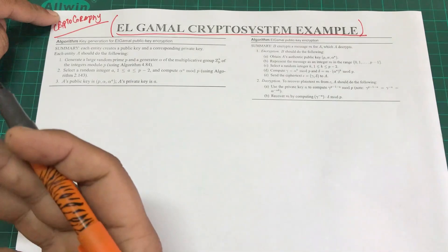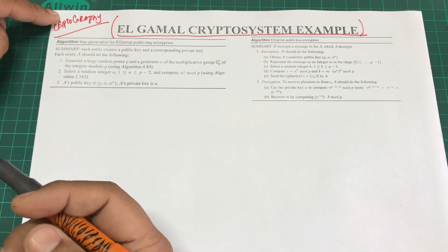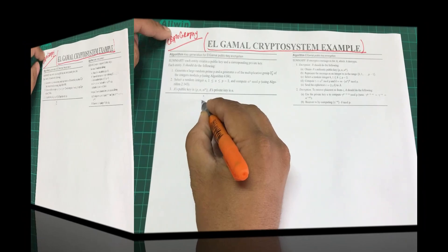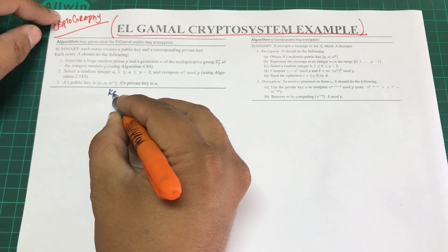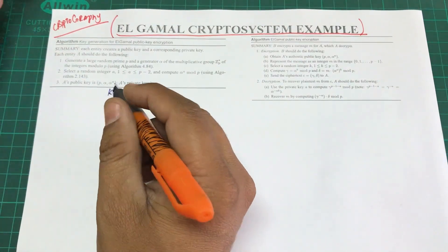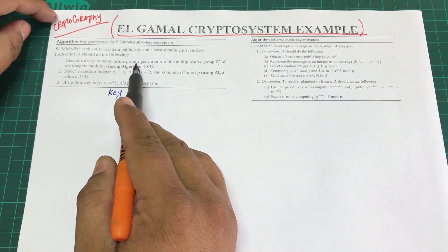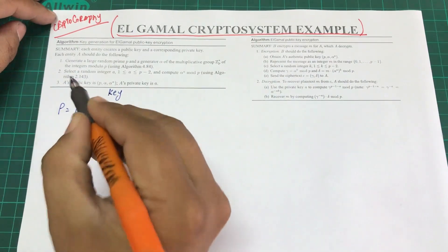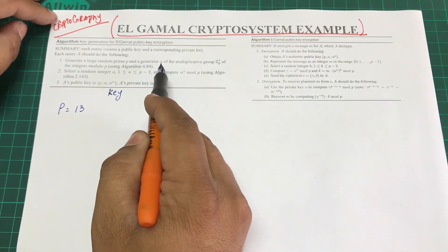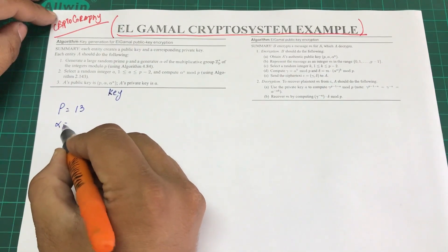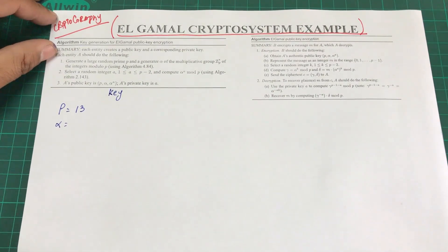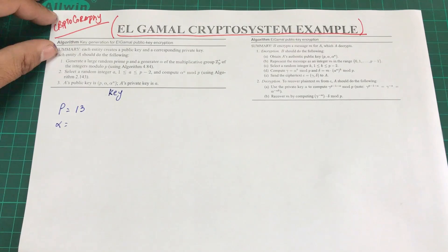For key generation, let's choose a prime number for simplicity. Let's select p = 13. Next, we need to select a generator. If you remember from the video on primitive roots — the same concept used in Diffie-Hellman — the generator is simply a primitive root of that particular number, which in our case is 13.